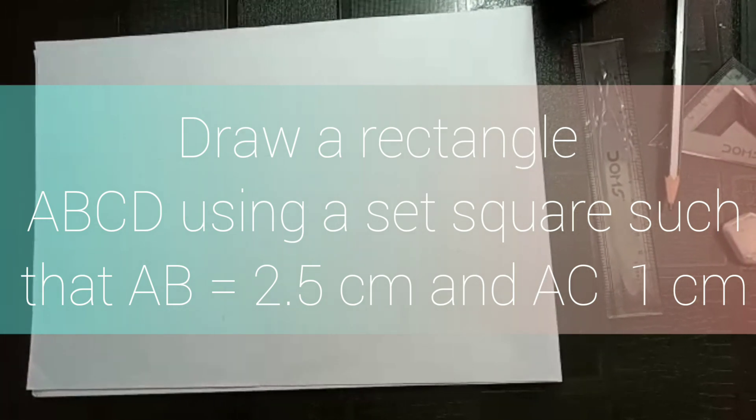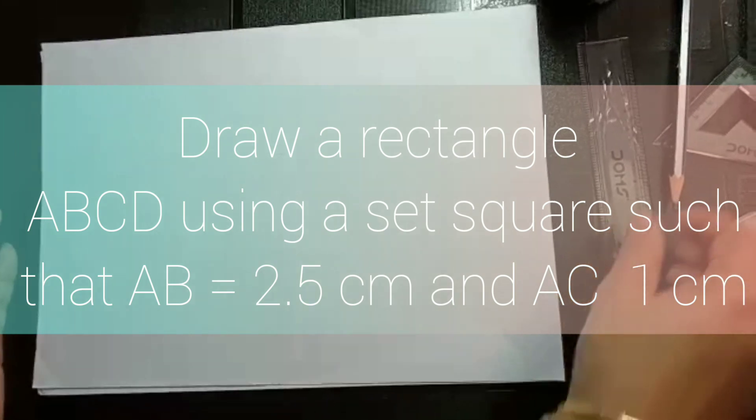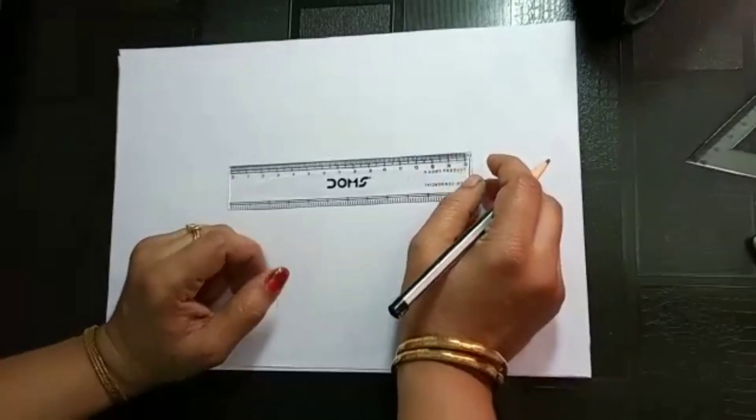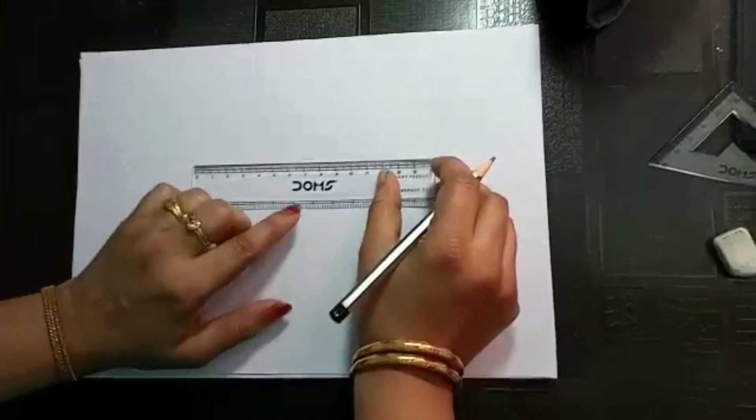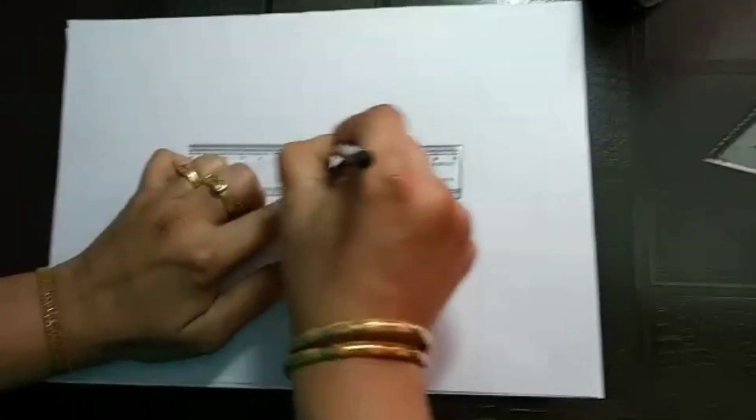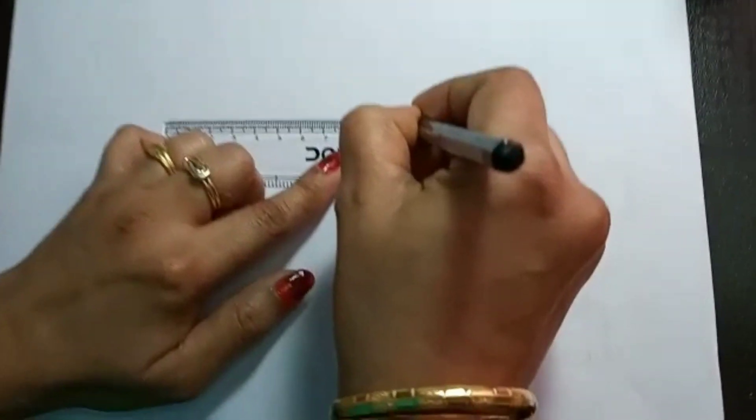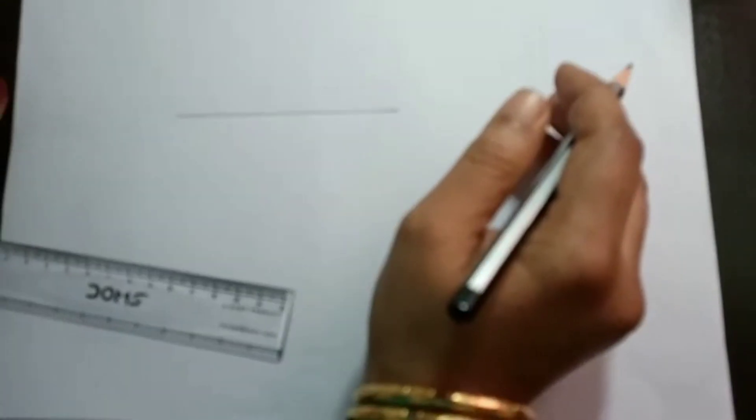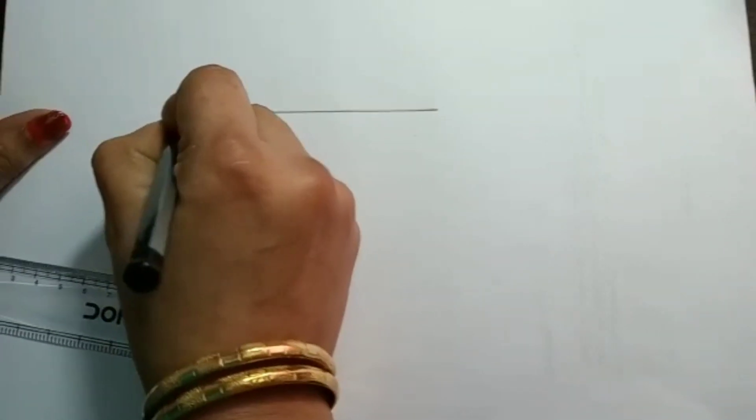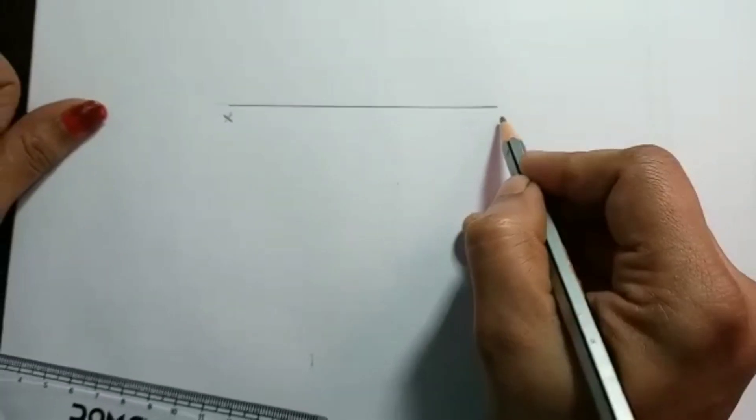So here we have to draw a line segment at first. This line segment can be of any length. Doesn't matter. So here I am going to draw a 10 cm line. So for that, 0 to 10 I just connected and made the line. So this side, this point I am just marking as X and here this point I am marking as Y.